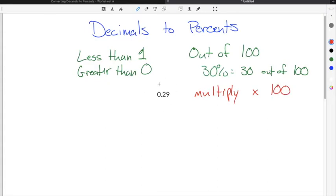This example gives us a decimal point of 0.29. In order to convert this decimal to a percent, we're going to take 0.29 and multiply it times 100. 0.29 times 100 is going to be 29 or 29 percent.